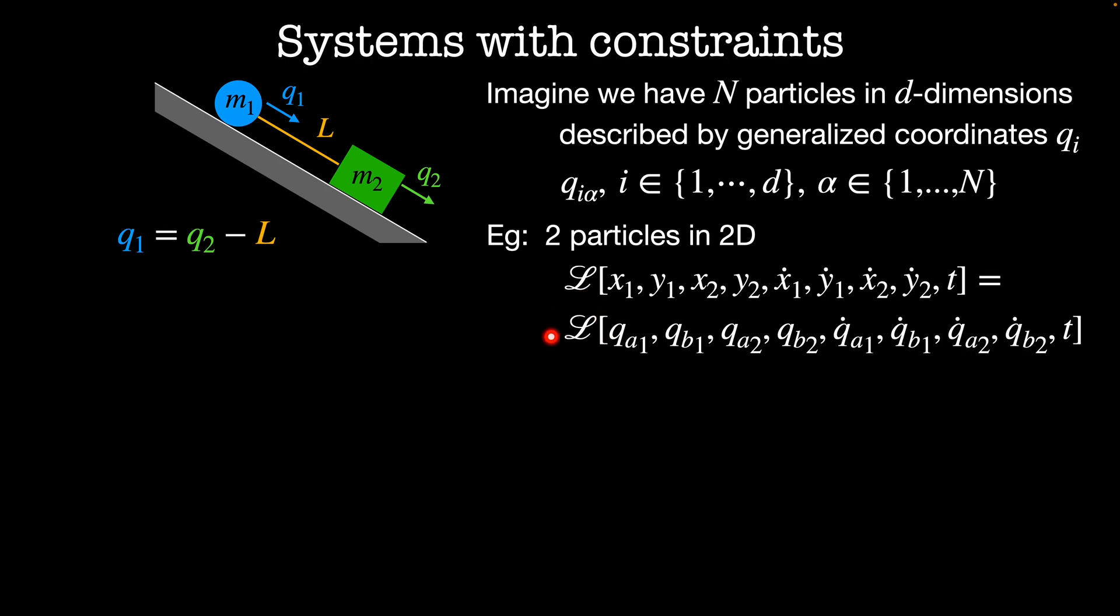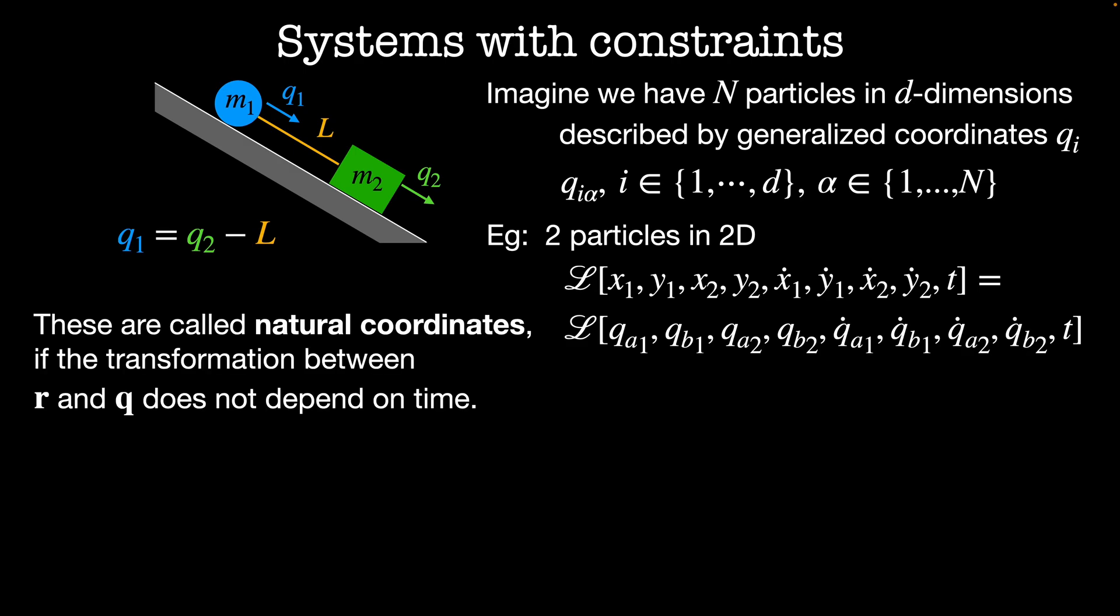Then our generic Lagrangian here is a function of the position of the first particle in the new coordinates which are qa1, qb1, the position of the second particle in the new coordinates which is qa2 and qb2, their velocities and time. These are called natural coordinates if the transformation between the Euclidean coordinates and the generalized coordinates does not depend on time.